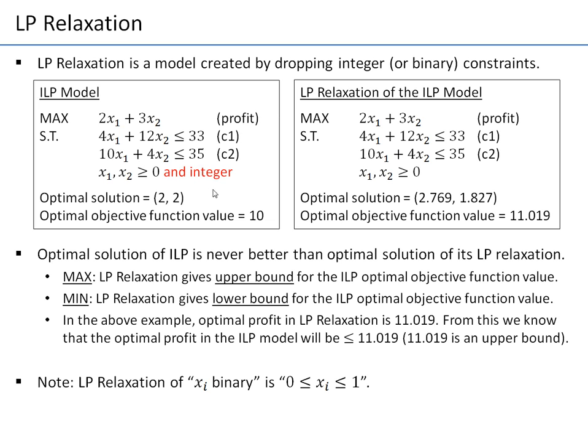When you drop integer constraint, the solution might improve. And that's what actually happened here. We found a solution with a higher profit. And now, if you consider going back from LP relaxation to the not relaxed problem with integer constraint reintroduced, adding integer constraint is a restriction. So if you add a constraint like any other constraint, if you add integer constraint, your solution might become worse.